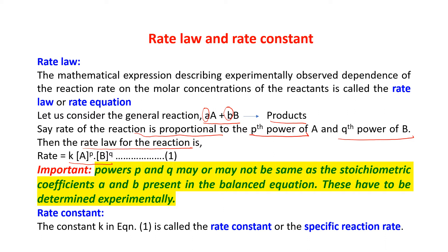The powers P and Q may or may not be the same as the stoichiometry — they may or may not match the stoichiometric coefficients. Experimentally, we may find that the rate of a reaction is not proportional to the stoichiometric value; it may be raised to some other power, the Pth power for A and the Qth power for B. These values have to be determined experimentally.